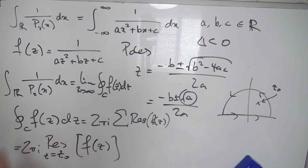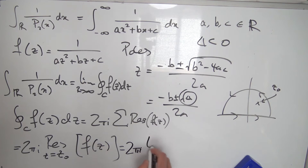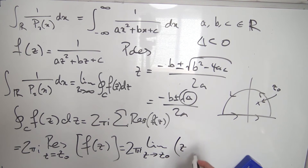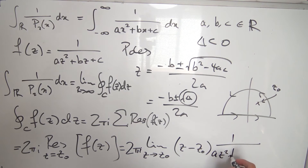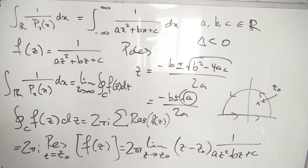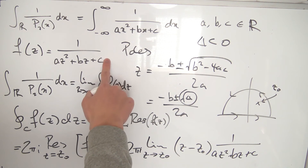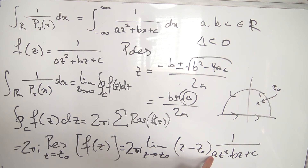Using the definition of the residue, this gives us 2πi times the limit as z → z₀ of (z − z₀) · f(z) = 2πi times the limit as z → z₀ of (z − z₀) / (az² + bz + c). If we plug in z = z₀, we get zero over zero since z₀ is a solution to the quadratic. So we have a 0/0 indeterminate form.